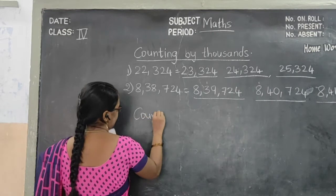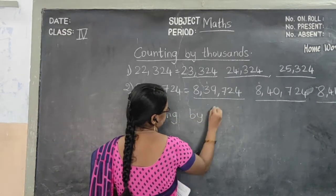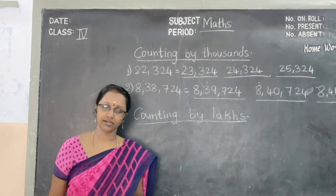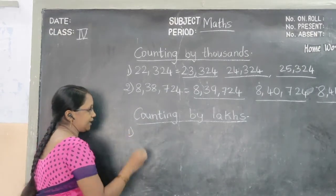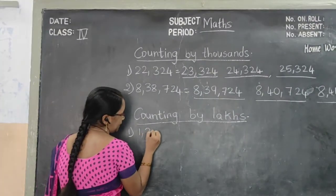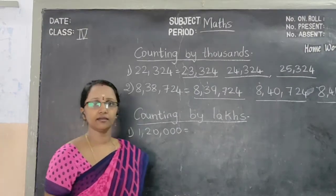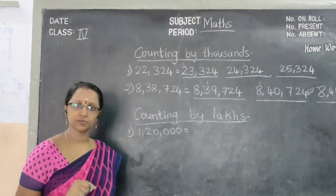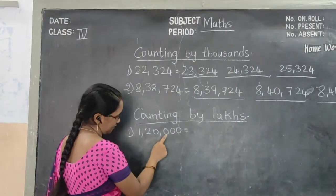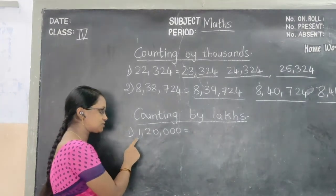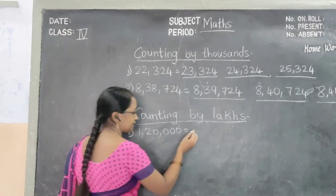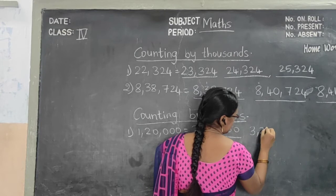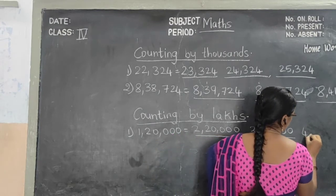Next, counting by lakhs. So we have done with 2's, then 4's, then 100's, then 1000's. Now we have come to counting by lakhs. See the first question: 1,20,000. They have said lakhs, so in the lakhs place only we have to change the number. In the lakhs place, the digits go: 1's, 10's, 100's, 1000's, 10,000's, and lakhs. So in the lakhs place, the number is 1. After 1 comes 2 — so 2,20,000. Then 3,20,000. Then 4,20,000.